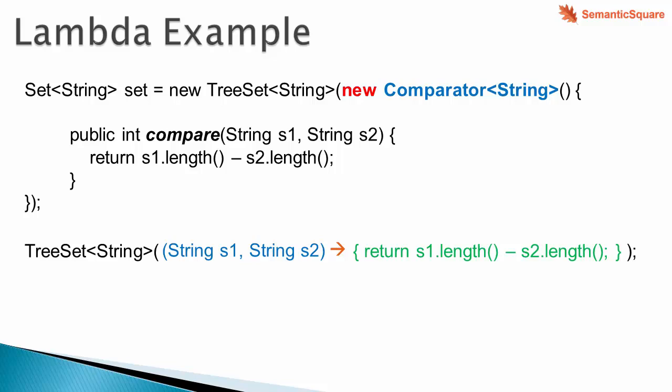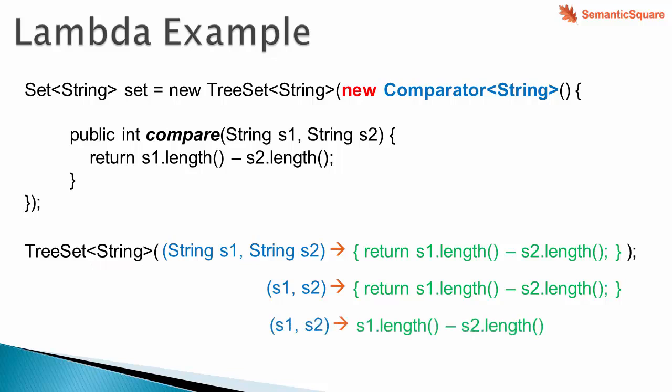We are simply passing the functionality of the compare method. As we can see, it is much more compact than the anonymous class version — without the new keyword, the following type name. It is also more efficient as we are not creating an object here. This lambda expression can be further simplified. A first simplification is to omit the parameter types for the two parameters, as they can be automatically inferred by the compiler from the type argument specified in the instance creation expression.